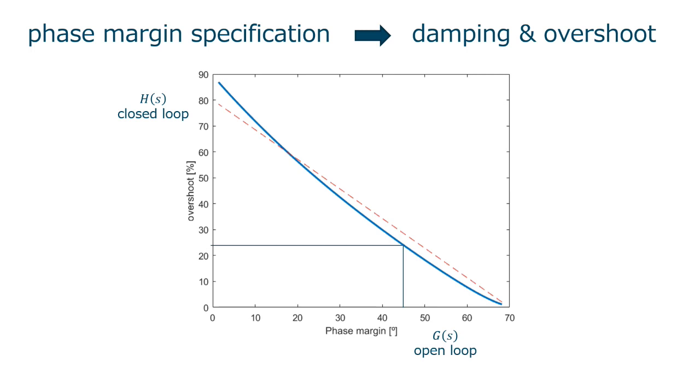Consolidating this dependency, we can establish a direct relation between the desired overshoot and the phase margin to be specified. For instance, an overshoot below 25% corresponds more or less to a phase margin of 45 degrees. You can approximate this curve by this straight line.